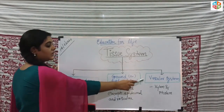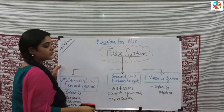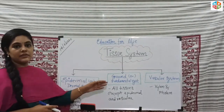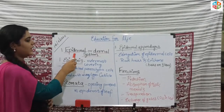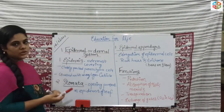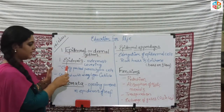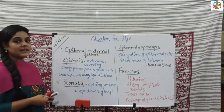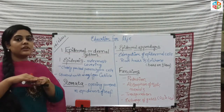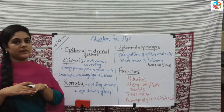The vascular system is the complex permanent tissue. It includes xylem, which helps in the transportation of water and food material. Now looking at the epidermal system in detail: the epidermal system is the outer covering — just as the skin is the outer covering of the body. The epidermal cells are closely packed parenchymal cells. There is also a waxy layer called the cuticle, which prevents the loss of water.